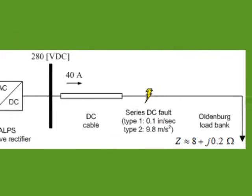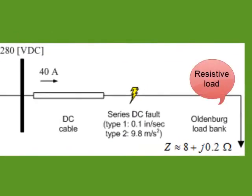Before the fault, the load is energized at 280 volts DC and draws about 40 amps of DC current.